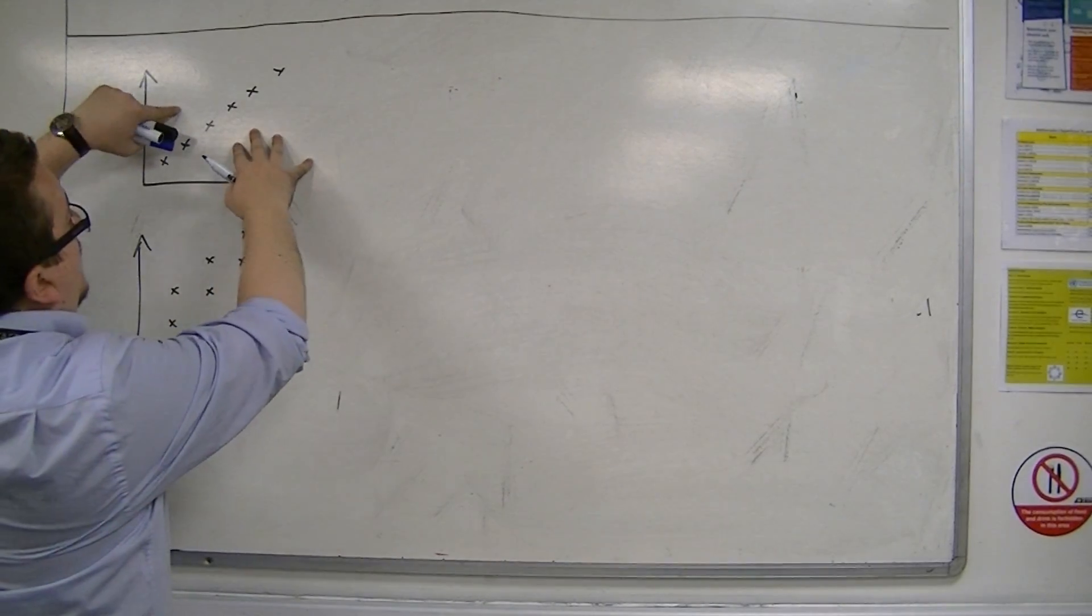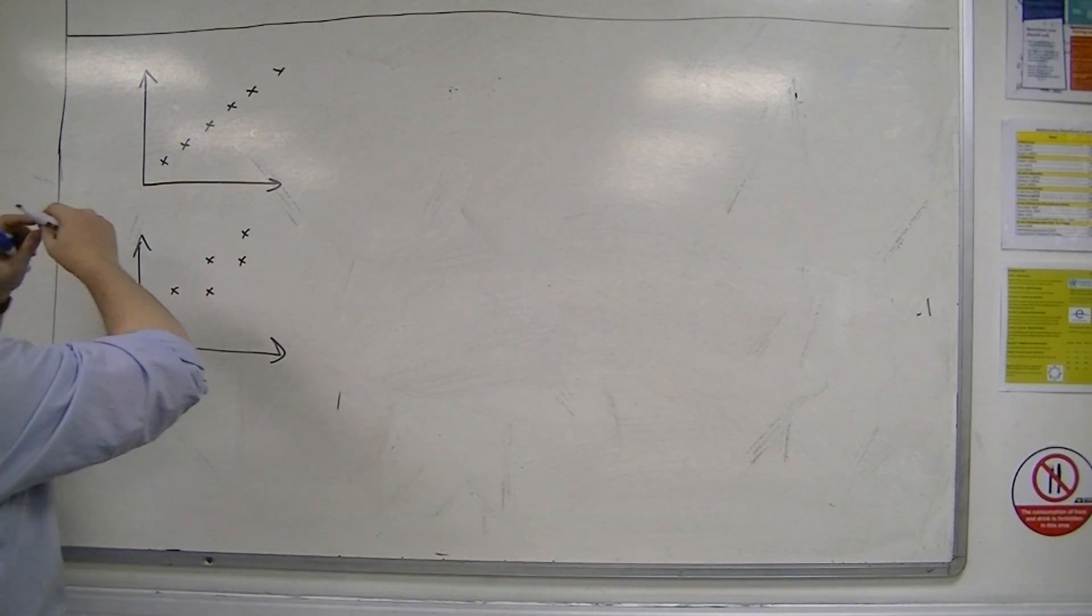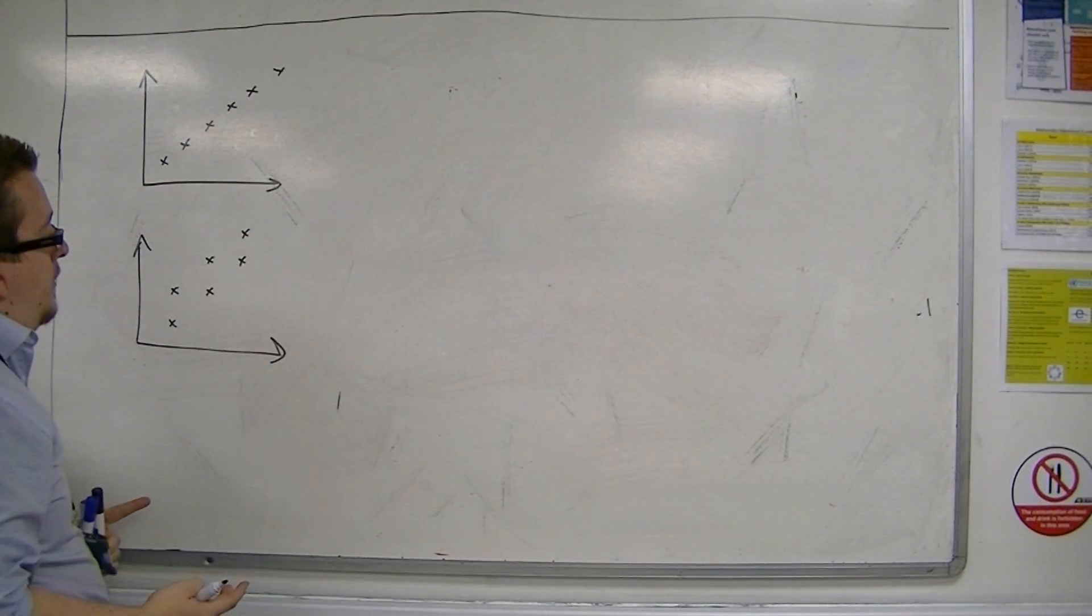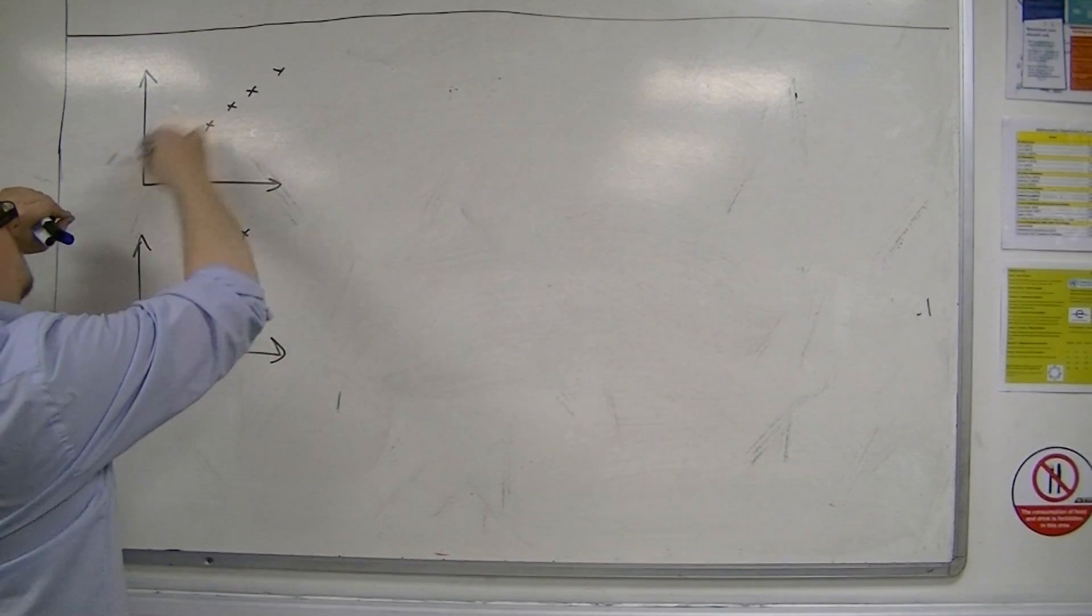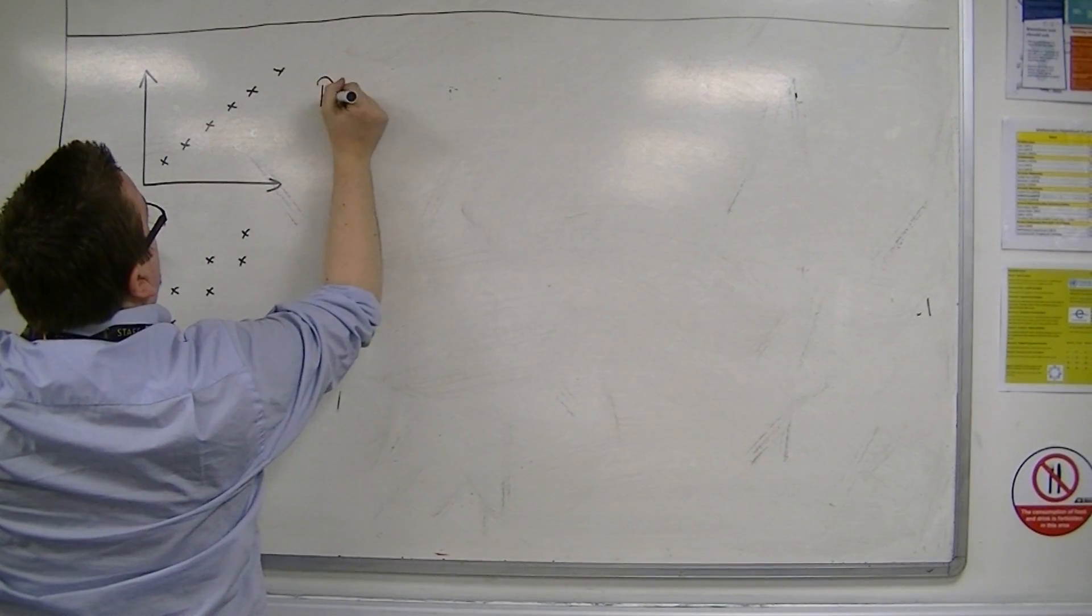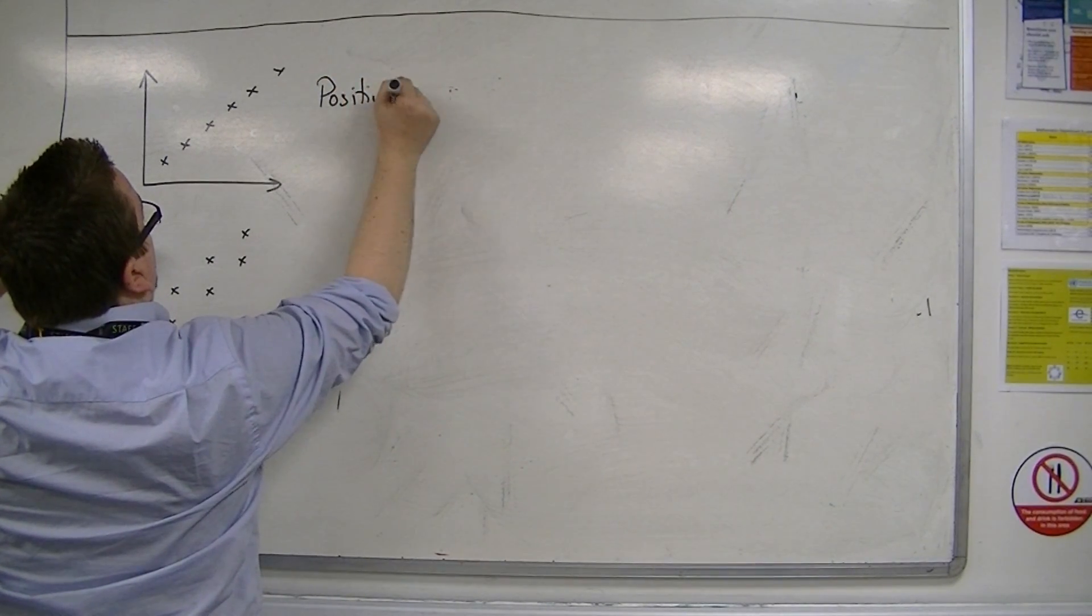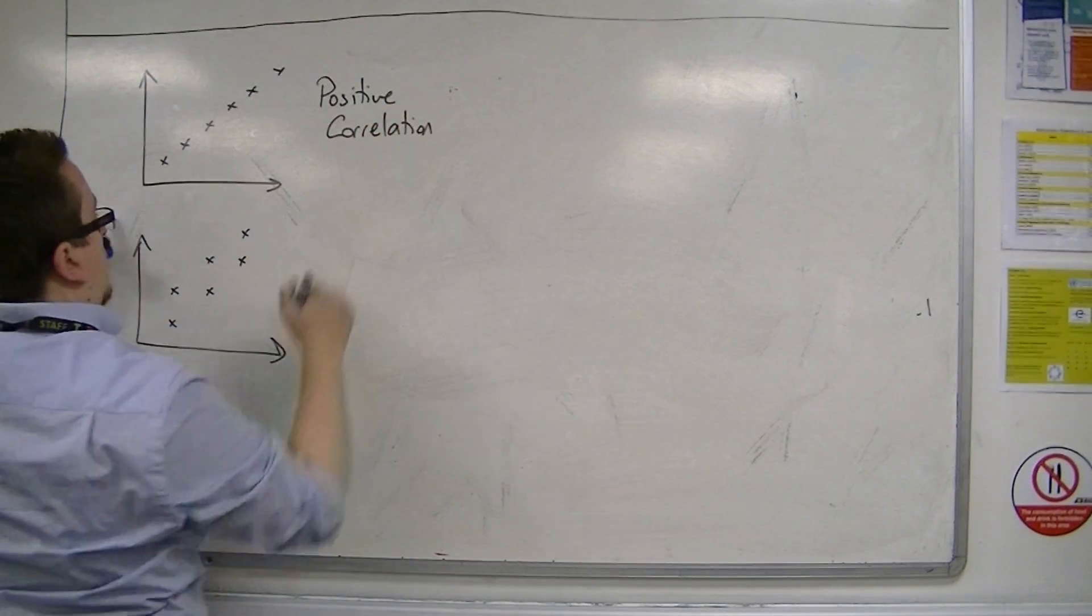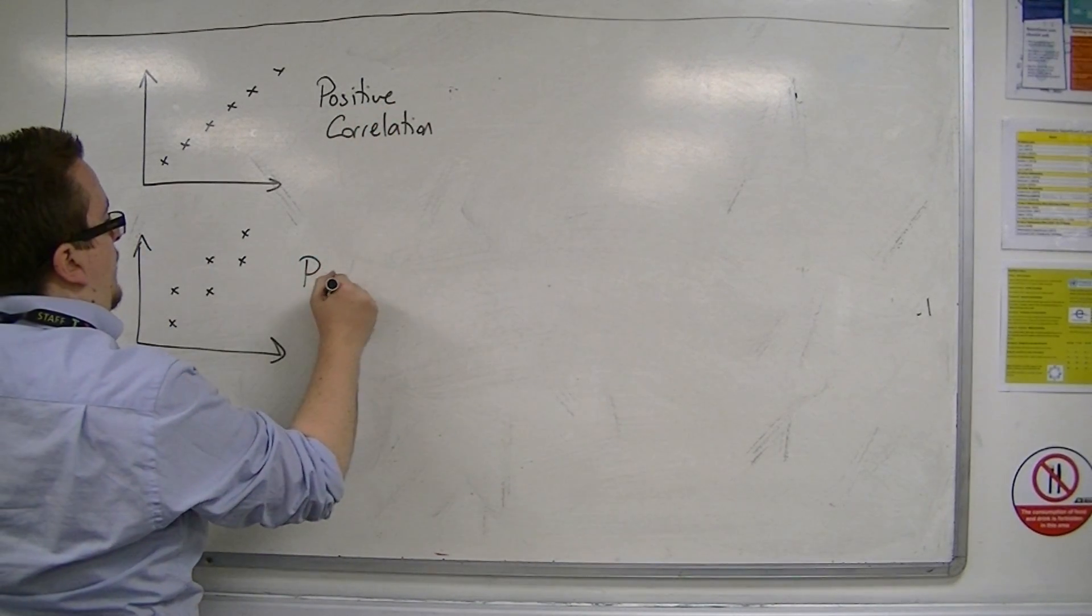However, in this case, you can see that the points are much more in a line than in this case. From going from bottom left to top right, we would call this positive correlation. And this would also be positive correlation.